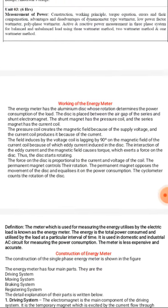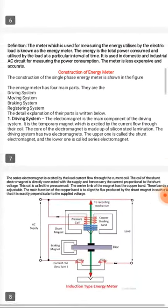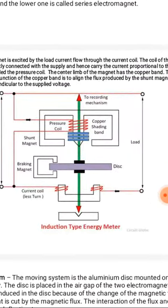It works on induction type principle. The energy meter has the aluminum disc whose rotation determines the power consumption of the load. You can see in this diagram: aluminum disc rotating due to the electromagnetic field generated by the shunt magnet and series magnet.